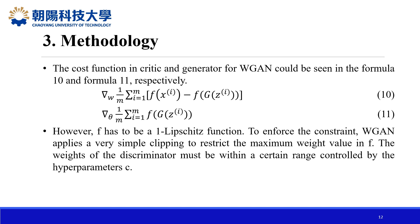The cost functions for the critic and generator in WGAN are given in formulas 10 and 11, respectively. However, F must be a 1-Lipschitz function. To enforce this constraint, WGAN applies weight clipping to restrict the maximum weight value in F. The weights of the discriminator must remain within a certain range controlled by the hyperparameter C.